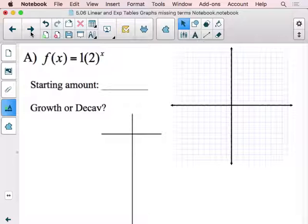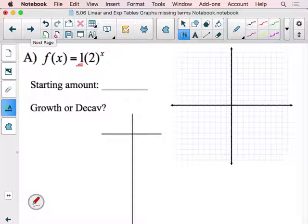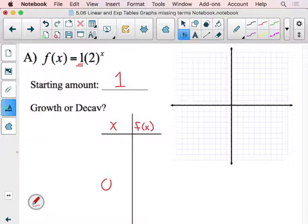All right, first example. We're given a function and what we're going to be doing today is trying to define certain characteristics about this function. We expect you to figure out what your starting amount is. We know that's given to you right there in an exponential function, so we know our starting value is one. Now you might want to say, okay, well then I know that my table - when it comes to x and f(x) - I now know it's going to have the point (0,1). I know that's my starting value. You could even throw that on the graph real quick if you wanted to.